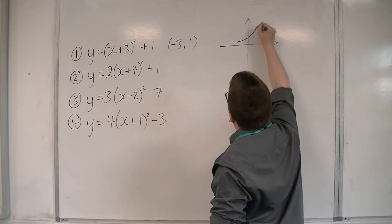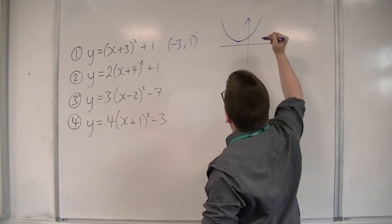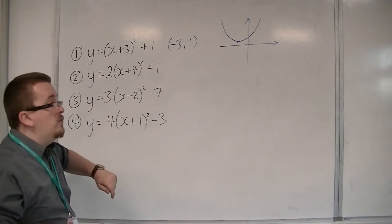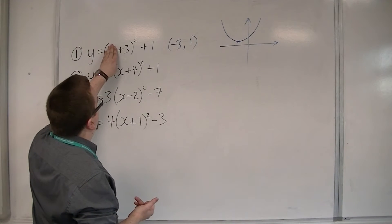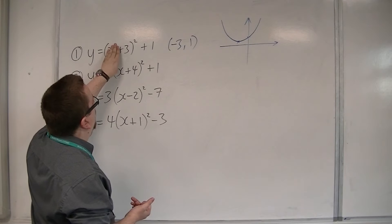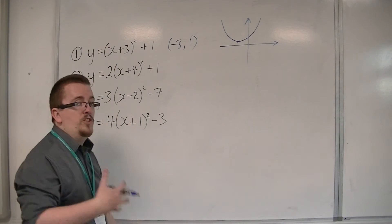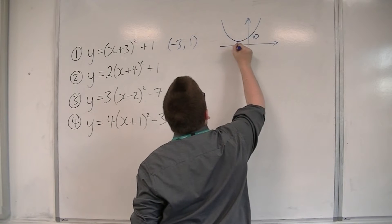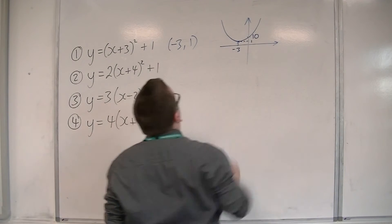And then the parabola will look something like that. And where it crosses the y-axis is when x is 0. So when x is 0, we get 3 squared plus 1, so 9 plus 1, which is 10. So that point is 10.